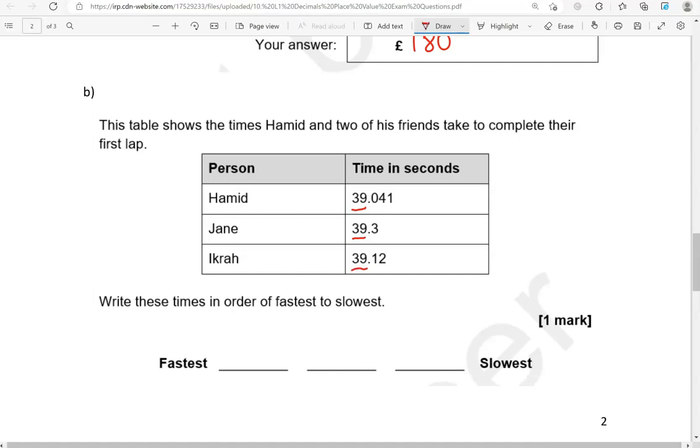So we need to focus on the first digit after the decimal point to decide which one is the shortest. So we've got 0 here, 3, and 1. 0 is the smallest. That's why 39.041 is the smallest number.